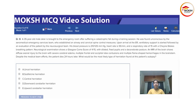His blood pressure was 210 over 125 mmHg. Heart rate is 55 per minute and a respiratory rate of 15 with a Cheyne-Stokes breathing pattern. Neurological examination shows a Glasgow Coma Scale of 4 out of 15 with dilated fixed pupils and a decerebrate posture.